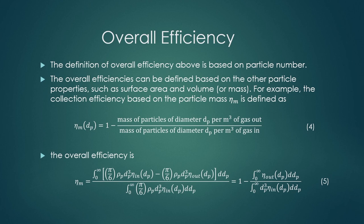The overall efficiency can also be defined based on other particle properties such as surface area, volume, or mass. For example, collection efficiency based on particle mass, eta_m(dp), equals 1 minus the mass of particles of diameter dp per meter cube of gas out divided by the mass of particles of diameter dp per meter cube of gas in. The overall efficiency based on mass of particles is expressed in equation number 5.